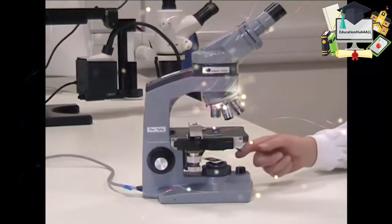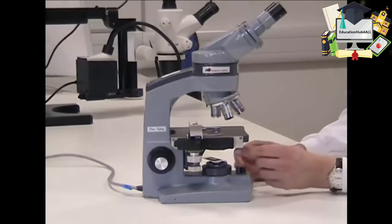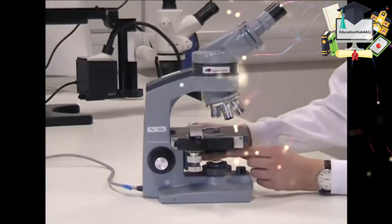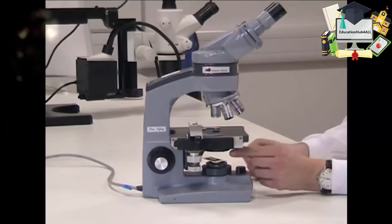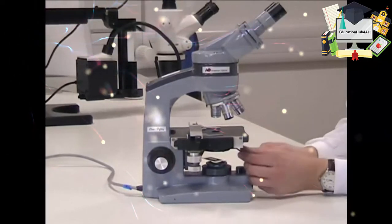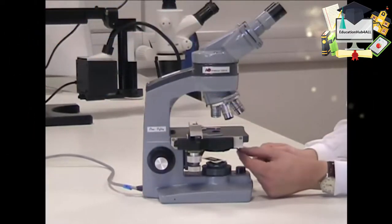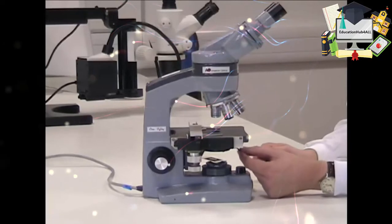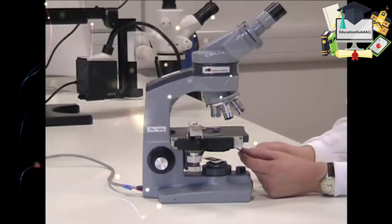The light is focused on the slide from below by this condenser lens here. Within the condenser lens system is this iris diaphragm which is adjusted by the lever at the front. This achieves something very important.